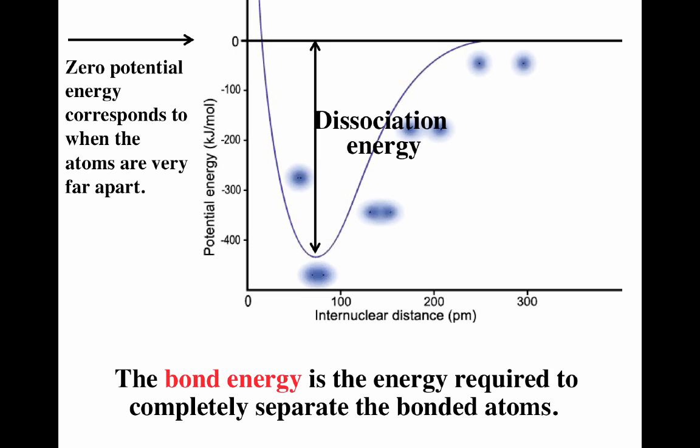Bond strength is the energy required to break the bond. We define energy as zero when atoms are infinitely far apart. As atoms come together, there is a strengthening of electrostatic interaction between electrons and nuclei. Eventually you reach an optimal configuration. If you get too close, nuclear-nuclear repulsions occur and the energy goes up. So the bond energy is just the energy required to completely separate the atoms.